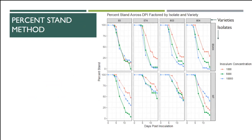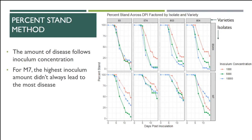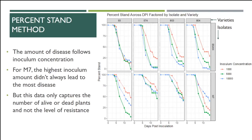Across the top I have different varieties — all somewhat resistant to Aphanomyces, but they differ. Down the side are two different isolates and my inoculum concentrations. These are just counts of how many plants were left over time. Generally, we found it fit nicely with our inoculum concentrations — we tended to see the least amount of disease at the lowest concentration and the highest disease at the highest. That was not necessarily true for one isolate, where the highest inoculum concentration was doing very weird things and not always killing plants. The point about this data is that it really just captures how many plants are alive and not much more. Sometimes a plant isn't alive, or it's alive but not doing great — you want to distinguish them.